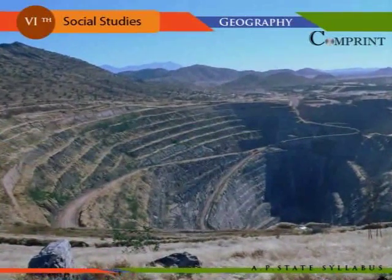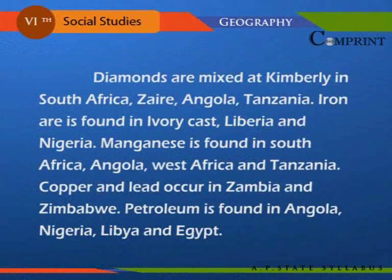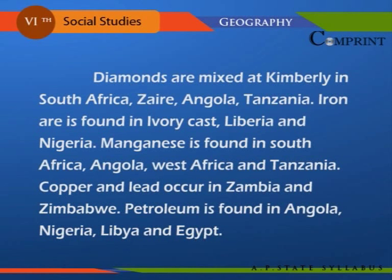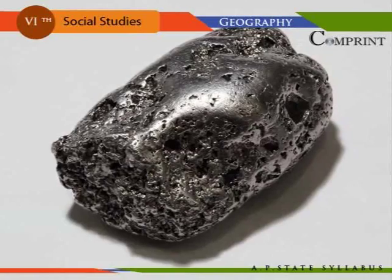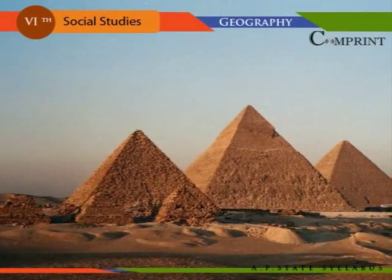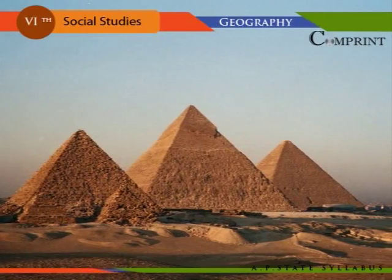Gold is mined in Johannesburg in South Africa. Diamonds are mined at Kimberley in South Africa, Zaire, Angola, and Tanzania. Iron ore is found in Ivory Coast, Liberia, and Nigeria. Manganese is found in South Africa, Angola, West Africa, and Tanzania. Copper and lead occur in Zambia and Zimbabwe. Petroleum is found in Angola, Nigeria, Libya, and Egypt. Platinum and uranium are found in South Africa and Zaire. Phosphate occurs in Morocco and Egypt. Bauxite is found on the coast of Guinea.